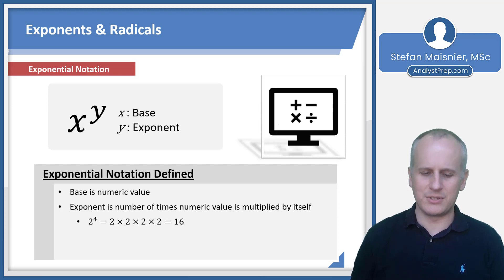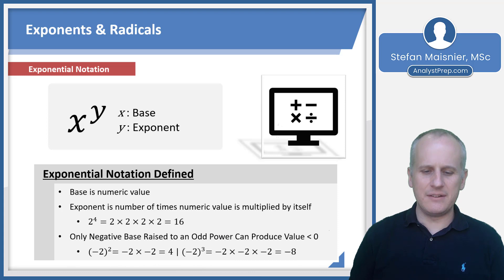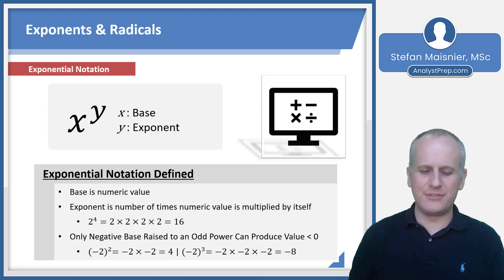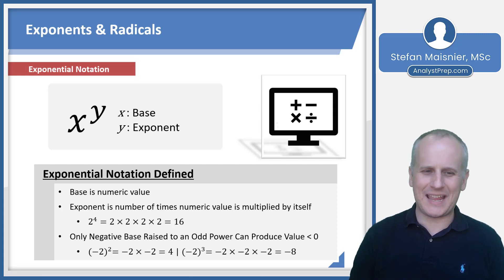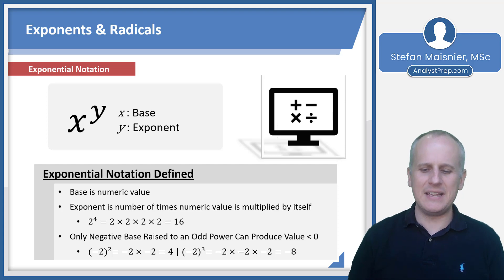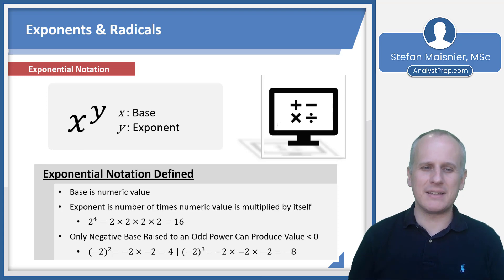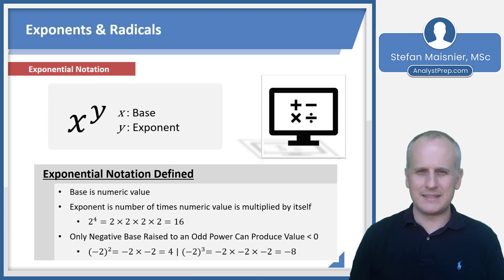Only a negative base raised to an odd power can produce a value less than zero. When you do negative two squared, you get negative two times negative two, and those negatives cancel to give positive four. But negative two to the third power gives positive four times another negative two, which becomes negative eight. This is a rule the exam can exploit in harder quantitative questions.